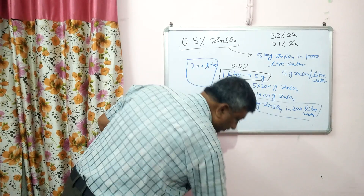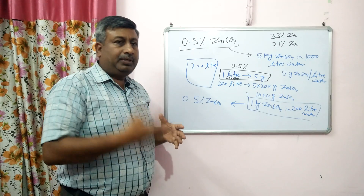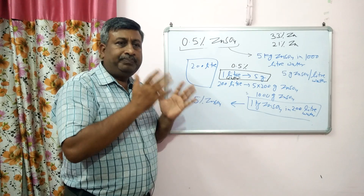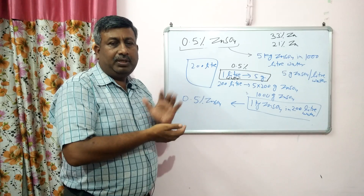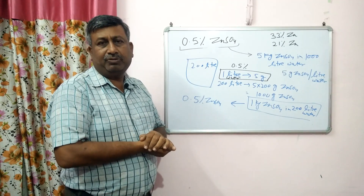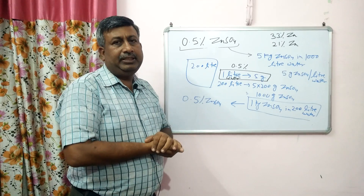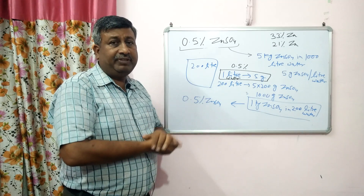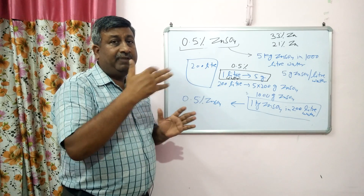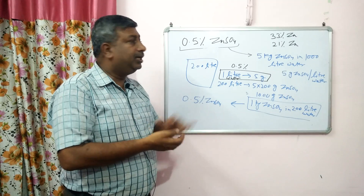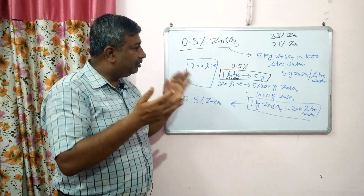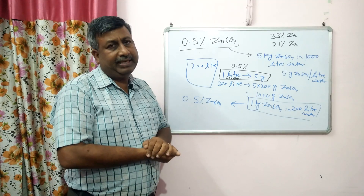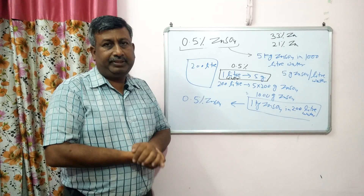We can go for foliar spray of zinc sulphate to correct zinc deficiency, as well as soil application. To avoid zinc deficiency, go for soil application: for heptahydrate it is 25 kg per hectare, and for monohydrate it is 15 kg per hectare. If there is deficiency in a standing crop, a 0.5% zinc sulphate solution is sufficient. If we make 1% zinc sulphate solution it will cause toxicity, and if we reduce it below 0.5%, zinc requirement will not be fulfilled. So 0.5% is the standard rate to correct zinc deficiency. Thank you very much.